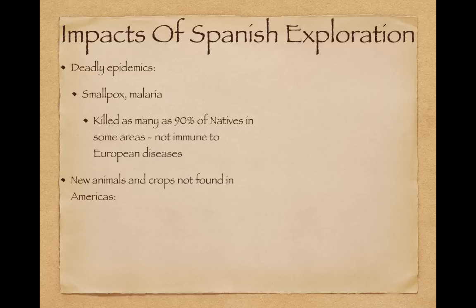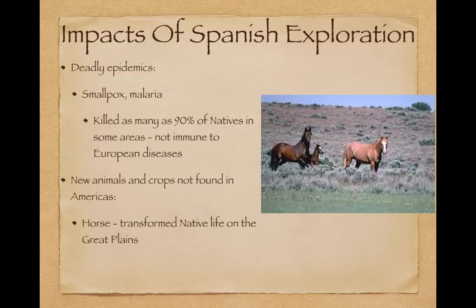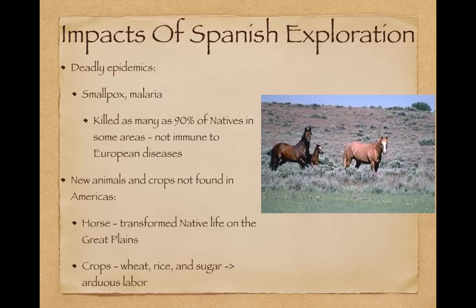New animals and crops not found in the Americas include horses, which transformed Native life on the Great Plains through hunting, and crops as well. Things like wheat, rice, and sugar began to grow in the Americas. This was a very arduous, hard labor process and took a lot of work to grow these crops, especially sugar.